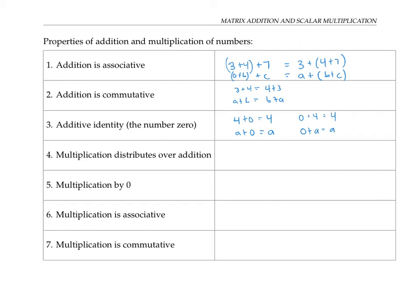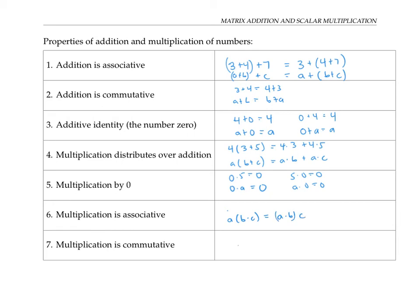We have the distributive property: multiplication distributes over addition. So four times (three plus five) is the same as four times three, plus four times five. That's true no matter what numbers A, B, and C you substitute. When you multiply any number by zero, you just get zero. Multiplication is also associative: A times B times C is the same as doing A times B first and then multiplying by C. And multiplication is commutative: A times B is the same as B times A.